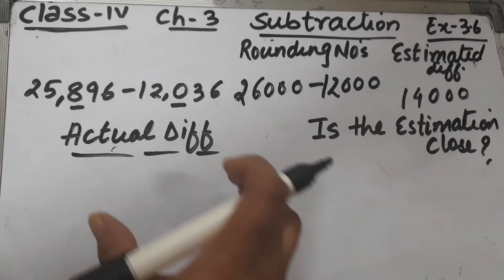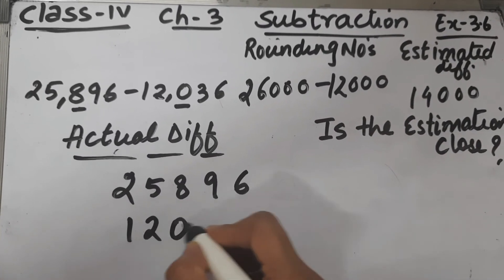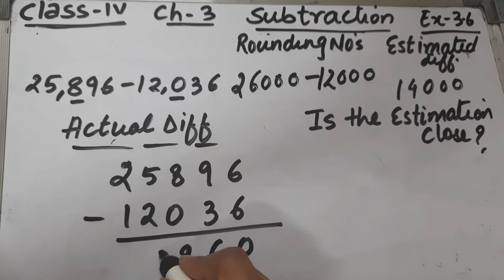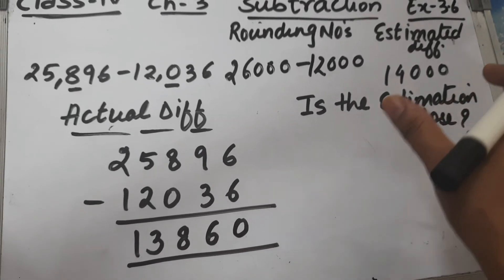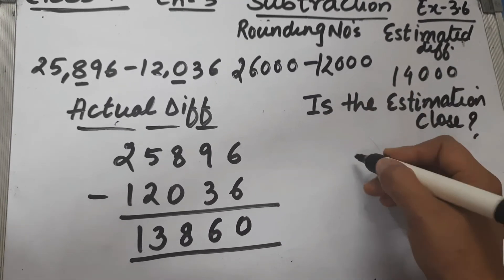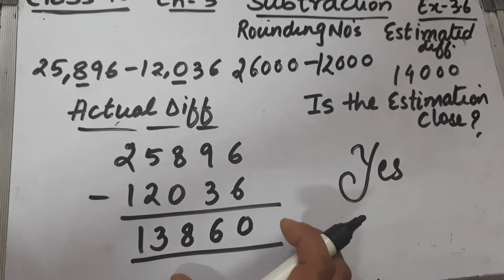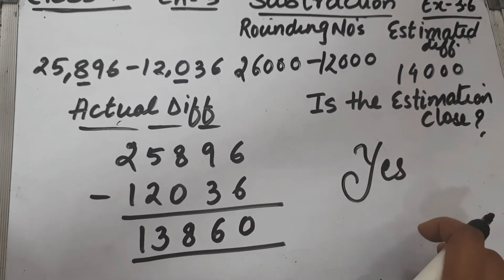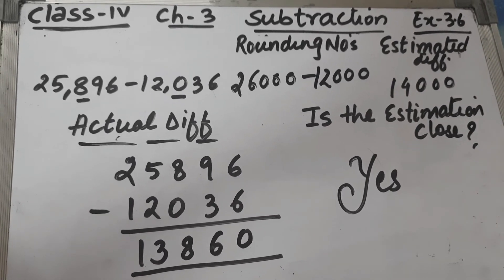Now for the actual difference, we subtract 25,896 minus 12,036. Six minus six is zero, nine minus three is six, eight minus zero is eight, five minus two is three, and two minus one is one. So the actual difference is 13,860 and the estimated difference was 14,000. The estimation is close to each other — there is only a difference of 140. So the estimation is close. I hope this question is clear and you will be able to solve the rest of the parts by yourself. Thank you.